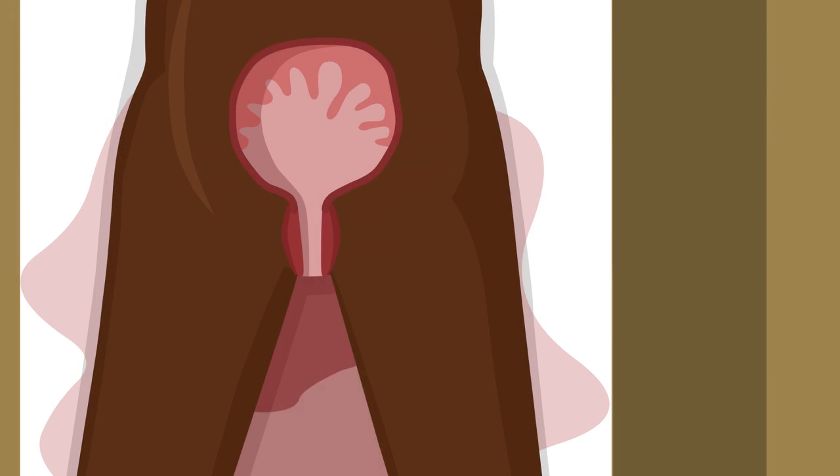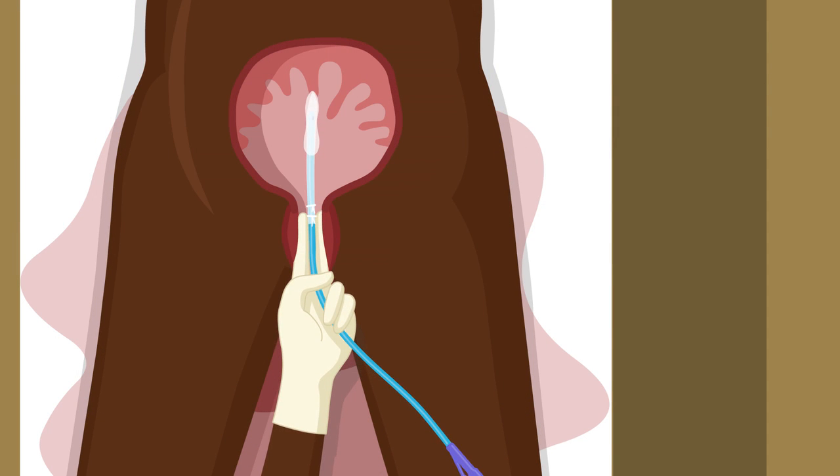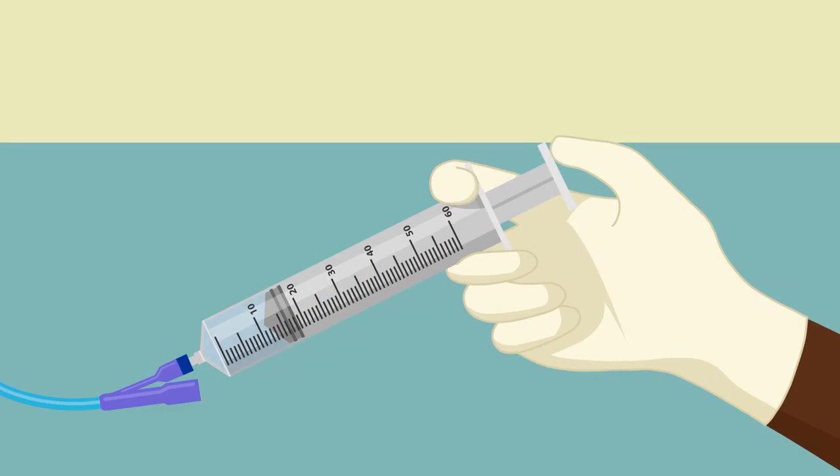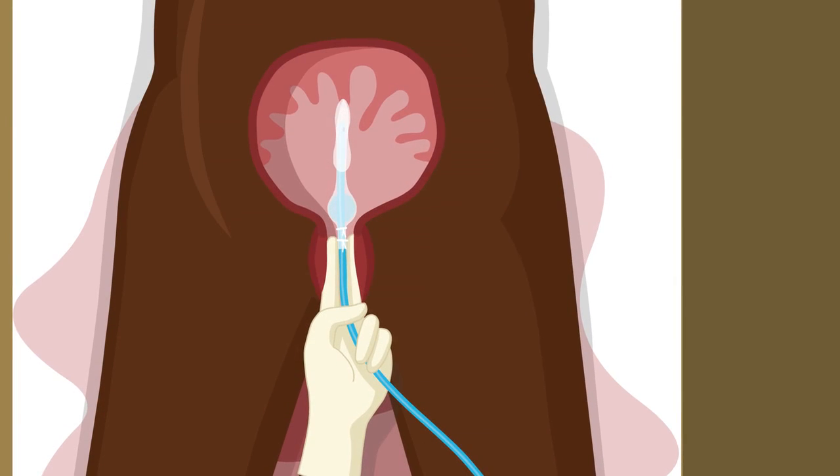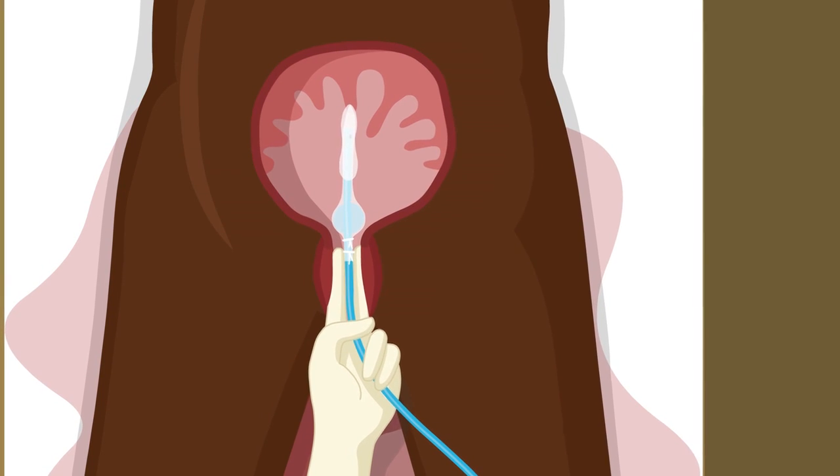She inserts the UBT into the uterus. She pushes 15 ml of clean water through the catheter into the Foley balloon to make sure the UBT does not come out.